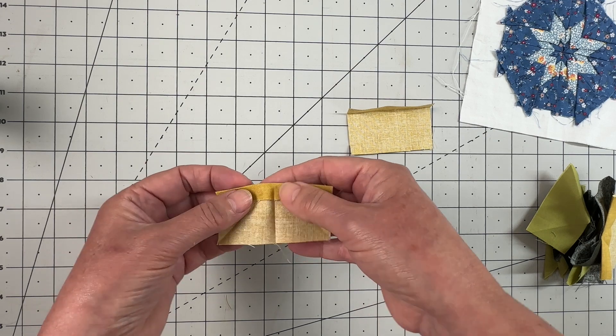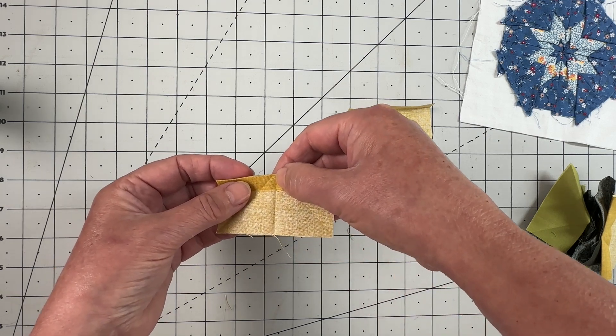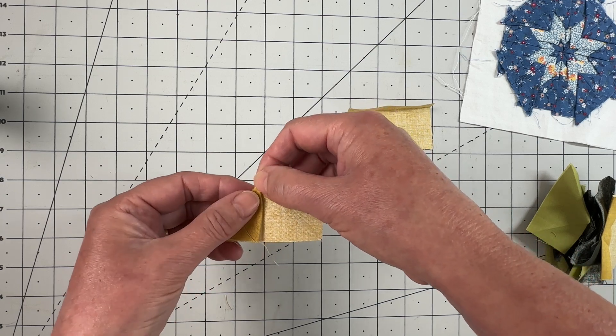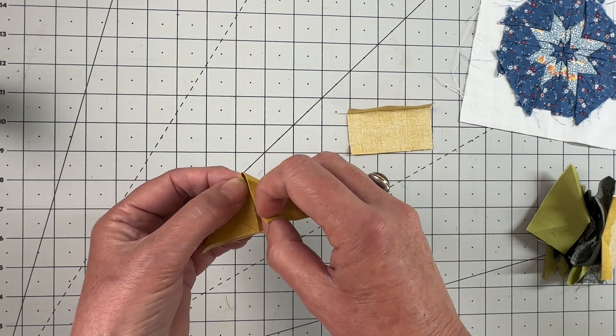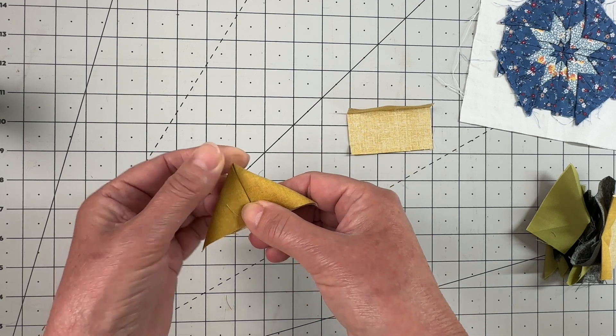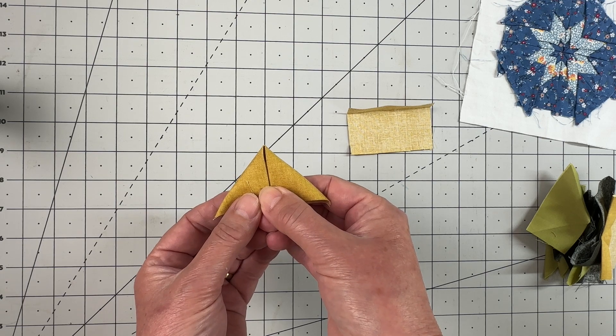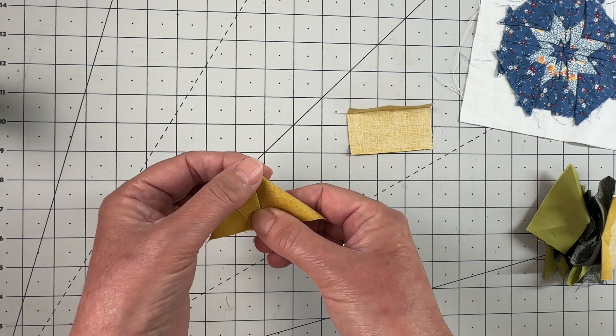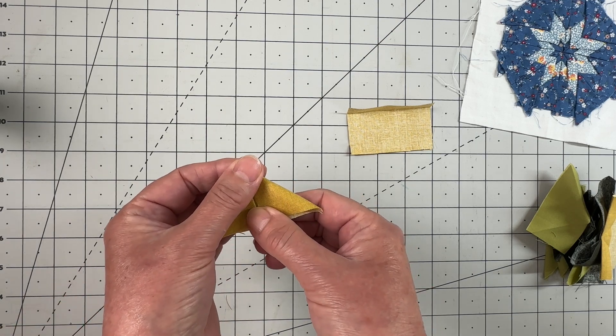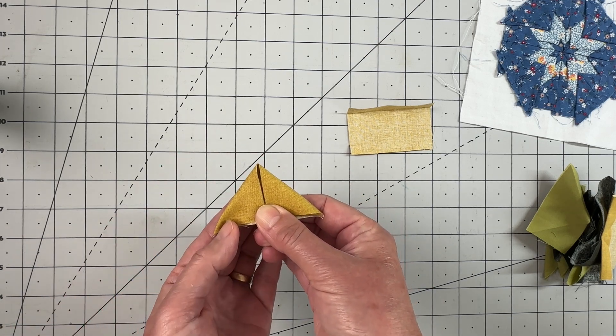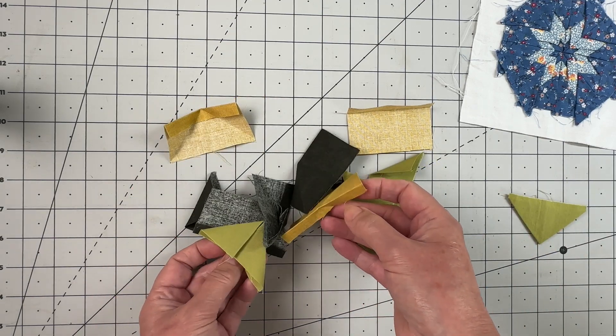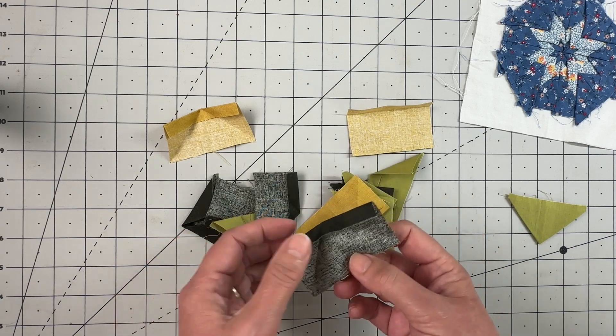Then you're going to open up and using that center point, you're going to fold that over to meet that center crease, and then fold the second one in to meet the center crease. Then you will press that with the iron. You can use some spray if you like to give it a better hold, and you're going to do that with all of your pieces.